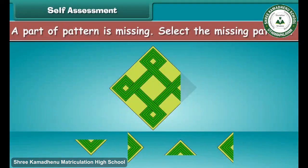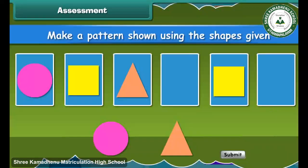A part of the pattern is missing. Select the missing pattern. Make a pattern shown using the shapes given. Drag and drop the circles and triangles in the frame to make the pattern.